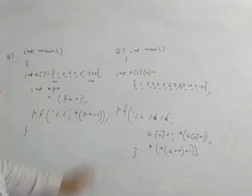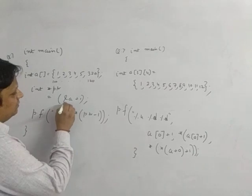Printed percentage, the comma star PTR minus A. See, again the same question. Address of A.